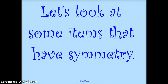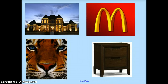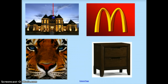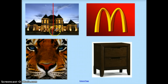Today we're going to look at some items that have symmetry. Let's look at these first four items and find their line of symmetry. In our first picture we have a house. Now not all houses have a line of symmetry, but this house does. I can draw a line right down the middle of this picture and both sides are congruent — they are the same. So this house has a vertical line of symmetry.